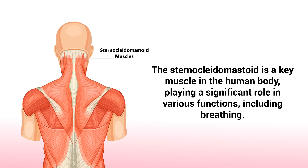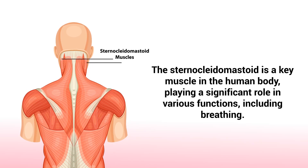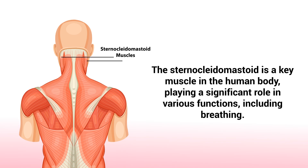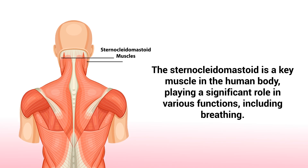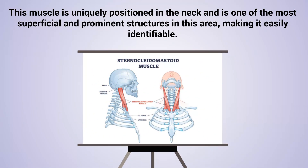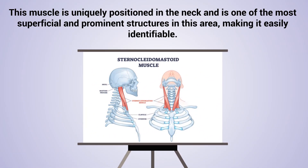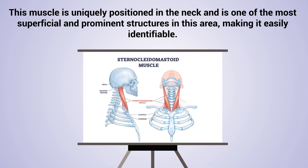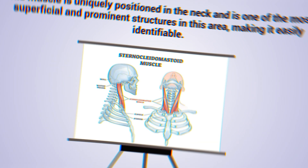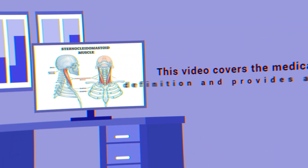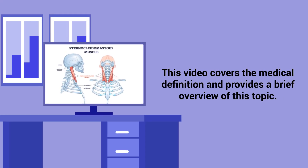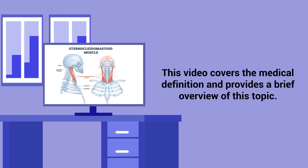The sternocleidomastoid is a key muscle in the human body, playing a significant role in various functions including breathing. This muscle is uniquely positioned in the neck and is one of the most superficial and prominent structures in this area, making it easily identifiable. This video covers the medical definition and provides a brief overview of this topic.